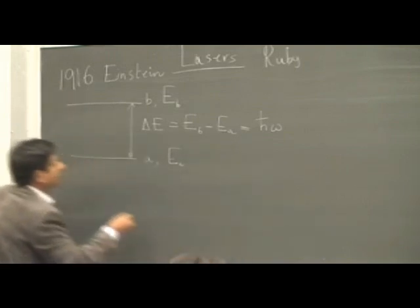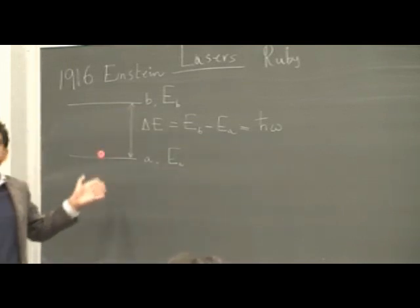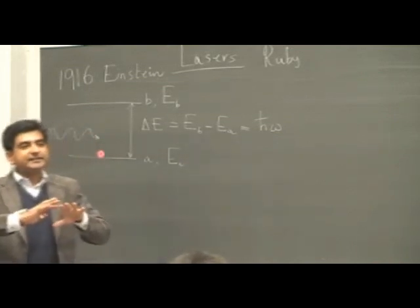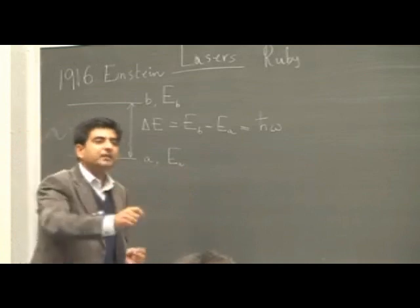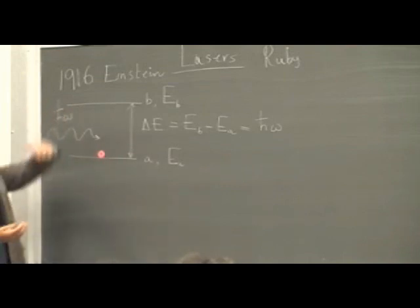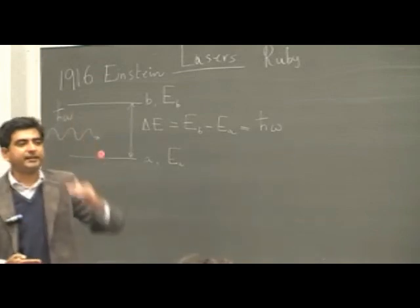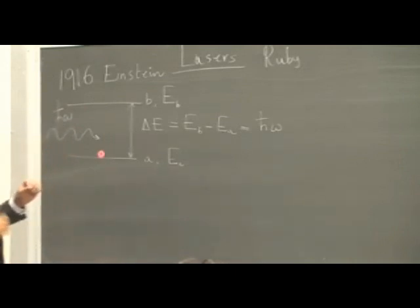Suppose there's an electron that sits in the lower energy level, and an external photon comes in. You place the atom inside some cavity and you shine light on it. And the frequency of that incoming photon, the frequency of that light omega, matches the energy spacing between the two levels. The electron will be excited and it will jump to the higher level. Because of the resonance condition, the incoming photon has precisely the same frequency as the energy gap. This is called absorption.